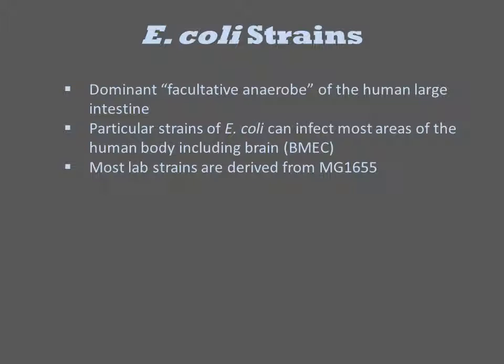Most prokaryotic species, including E. coli, are defined by ribosomal RNA sequence, general similarity of the entire genome sequence, and some specific assayable qualities. One of the distinctive properties that defines E. coli is the presence of lactose catabolic genes. E. coli is the dominant facultative anaerobe of the human large intestine. There are particular strains of E. coli that can infect most areas of the human body, including the brain. However, this ability is specific to specific strains.